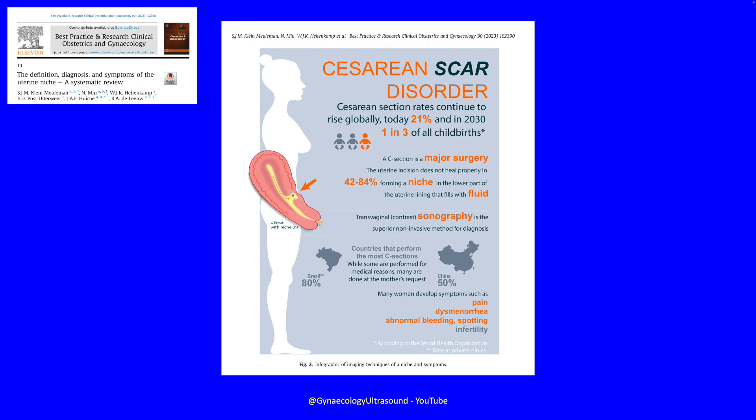Scar disorders are becoming more common because caesarean sections are becoming more common. Some countries now have section rates of 80%, and in the UK it's about 21%, but it's going to go up to one in three of all childbirths by the end of the decade. A lot of these section scars don't heal properly, so between 42 and 84% form a niche in the lower part of the uterus.